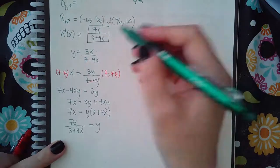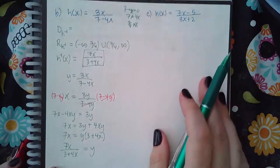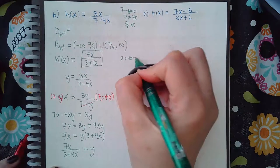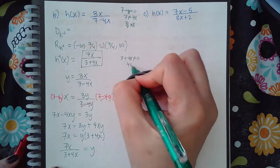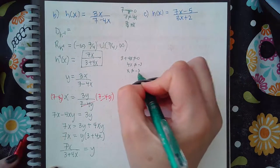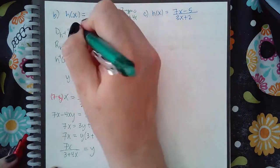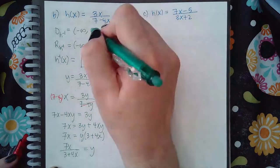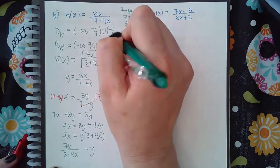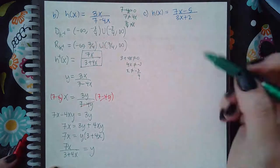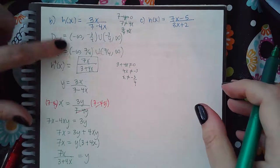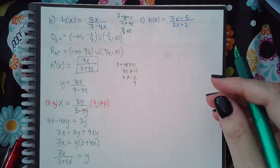To find the domain of h inverse, I set the denominator not equal to zero. So x cannot equal negative 3 fourths, which means the domain is from negative infinity to negative 3 fourths, and then from negative 3 fourths to infinity. For this problem it definitely matters which one you put in which spot, because the domain and range are different from one another.